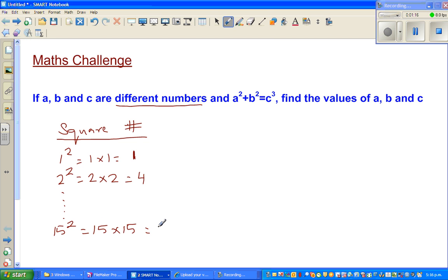Now cubic numbers or cubes. 1³ = 1 × 1 × 1 = 1, so 1 is also a square and also a cube number. 2³ means 2 × 2 × 2, which is not 6 but 8.